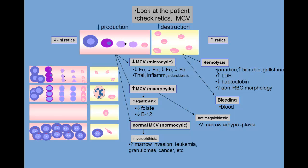A key step in evaluating a low-reticulocyte normocytic anemia is to check the BUN and creatinine to determine if the cause is renal failure. If not, the problem might be the anemia of chronic inflammation or hypoplastic or aplastic anemia.